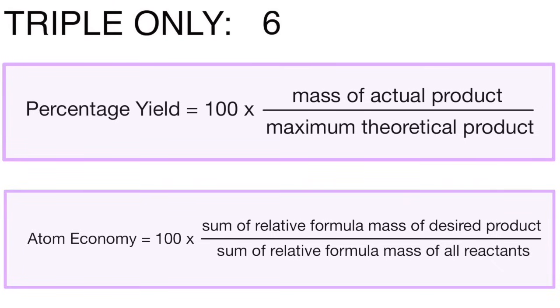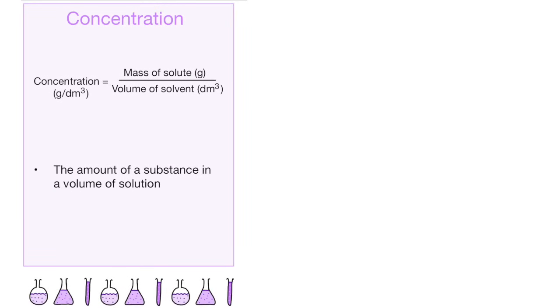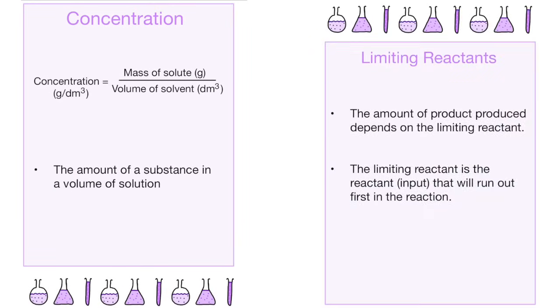For triple students only, another subtopic to look at is percentage yield and atom economy. And then for both combined and triple, concentration and limiting reactants.